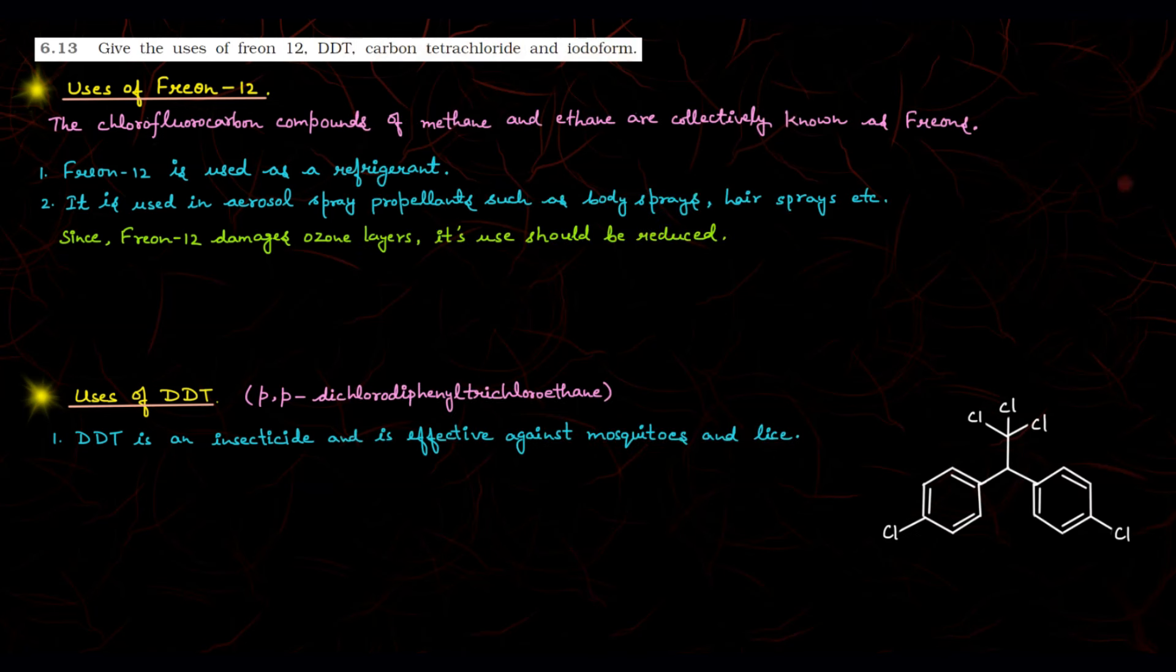So we have written here first the uses of Freon-12. What is it? The chlorofluorocarbon compounds of methane and ethane are collectively known as Freons. What are Freons? Chlorofluorocarbon compounds. If we take an example here, we have written Freon-12. Freon-12 is used as a refrigerant. What is Freon-12? Freon-12 is CCL2F2. So we'll write here this is CCL2F2. Chlorofluorocarbon compound. Where do we use this? As a refrigerant.